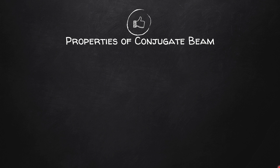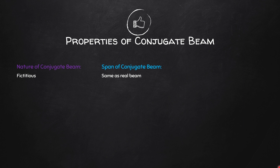Let's see the properties of conjugate beam one by one. Number one: the nature — it is a fictitious beam, meaning it is not a real beam, it is a virtual beam. Second: the span of a conjugate beam is the same as the span of the real beam. Third: the supports of the conjugate beam are not the same as that of the real beam — we will see this in a couple of slides.